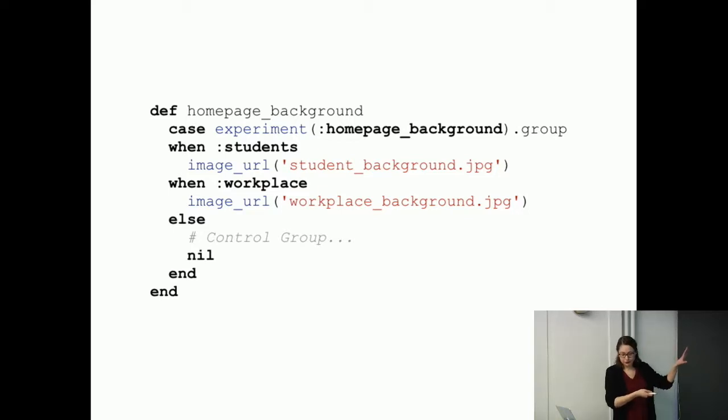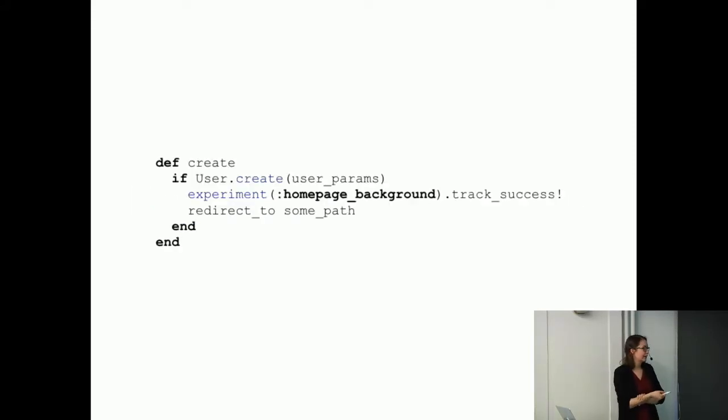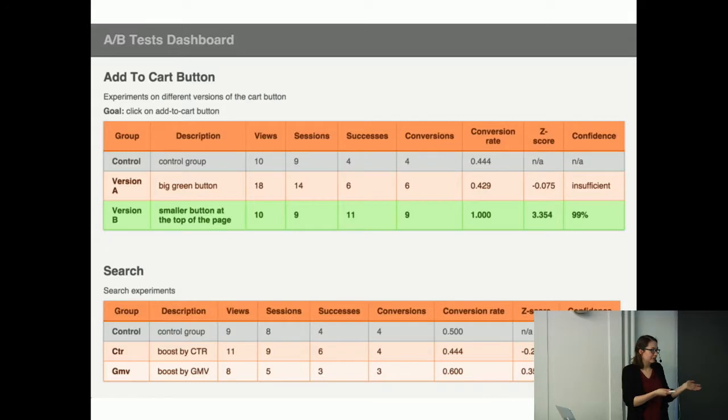And then, so this is part one. So I differ between the different versions. Then the second part is I, of course, need to track my conversion. So I need to track the sessions and I need to track the successes. So to track the views, I basically do this. So I just track view on the experiment I want to track it. In my case, as I said, it's some kind of homepage. So I'm doing this. And then I do more or less the same when I say I'm on sign up, which is also some other action where I then track the success.